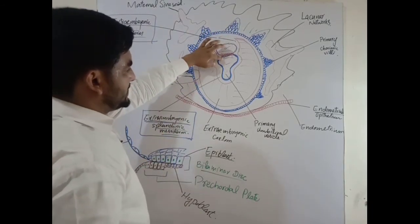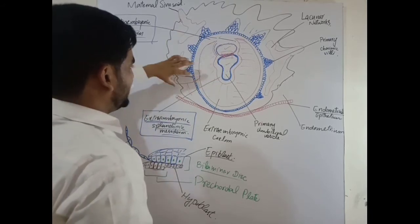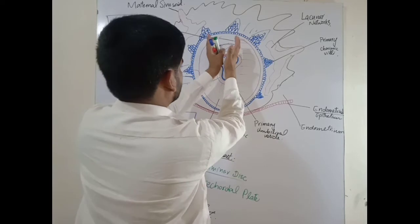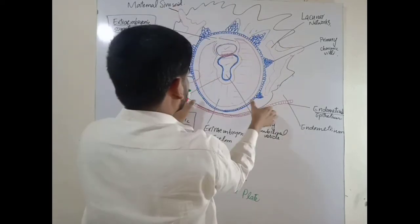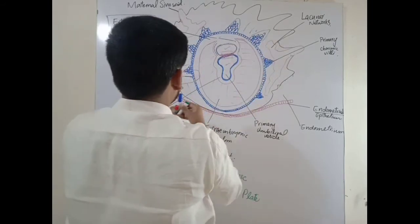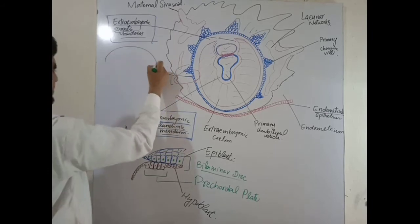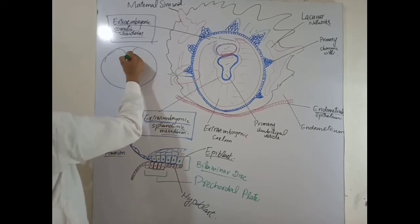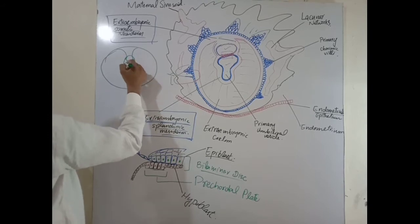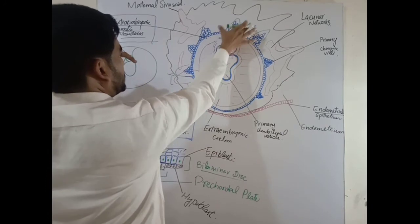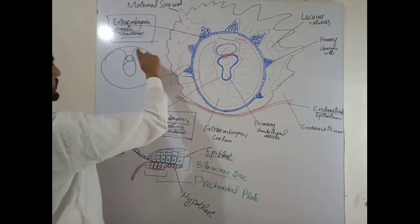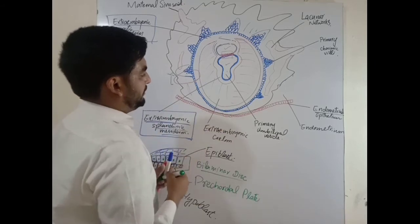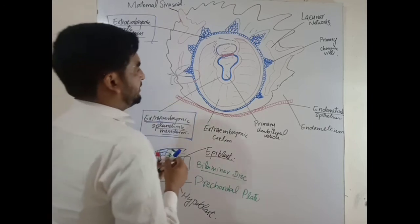The amnion, embryonic disc, and primary umbilical vesicle are suspended in the chorionic sac through the connecting stalk. This connecting stalk connects these structures with the chorionic sac. The extra-embryonic coelom is the primordium of the chorionic cavity.